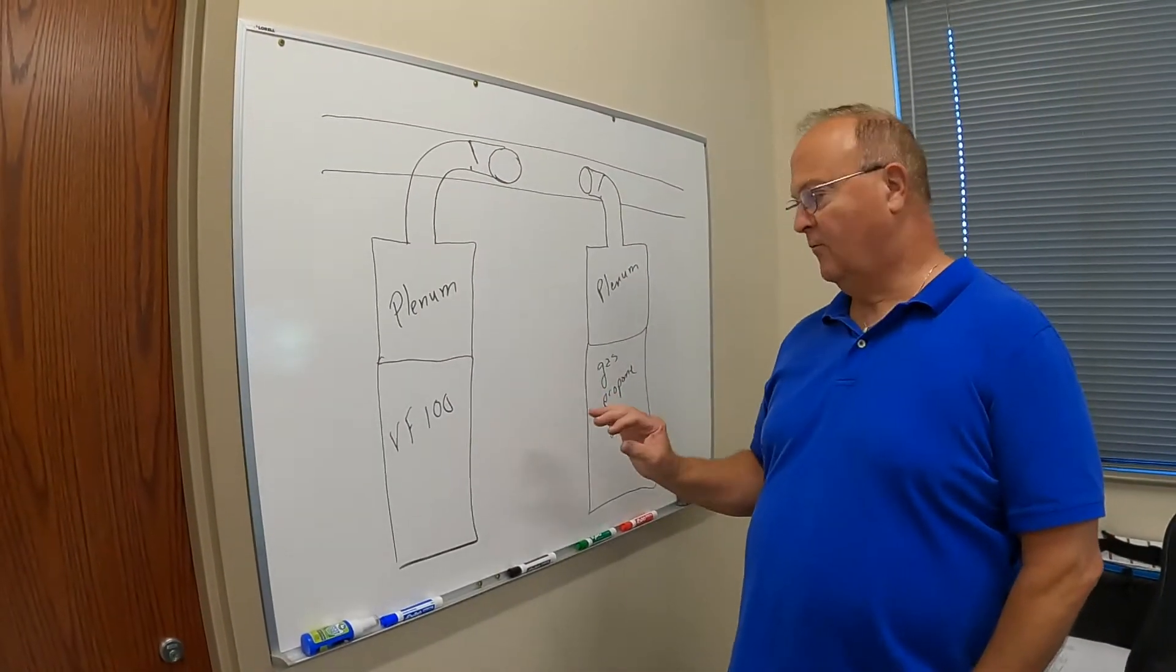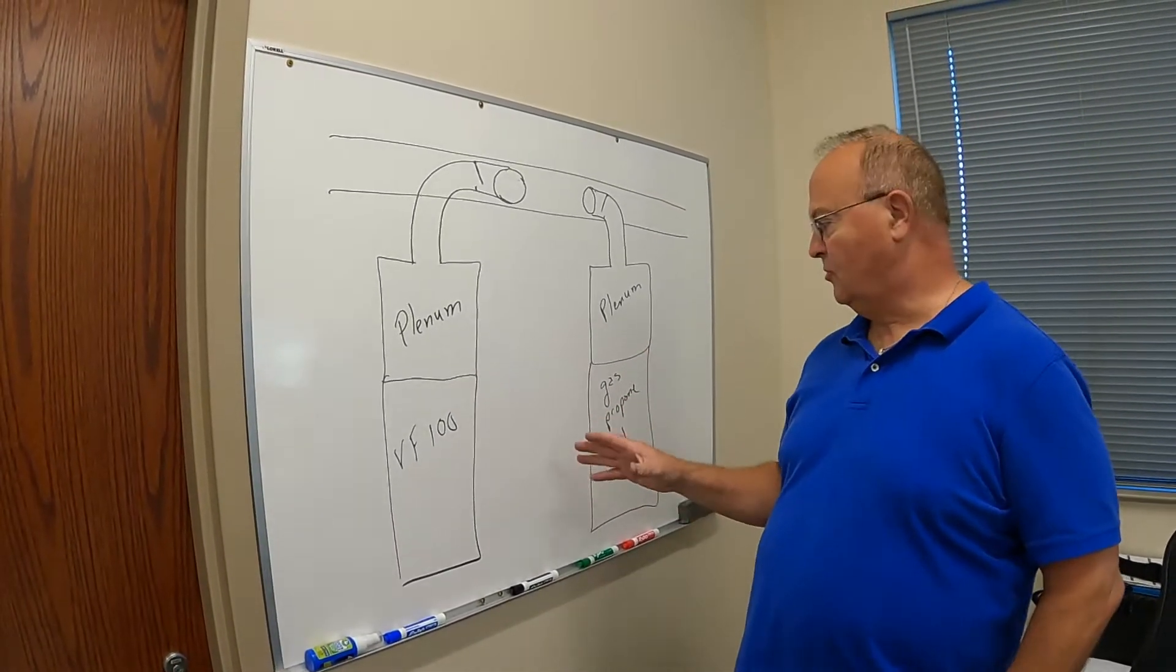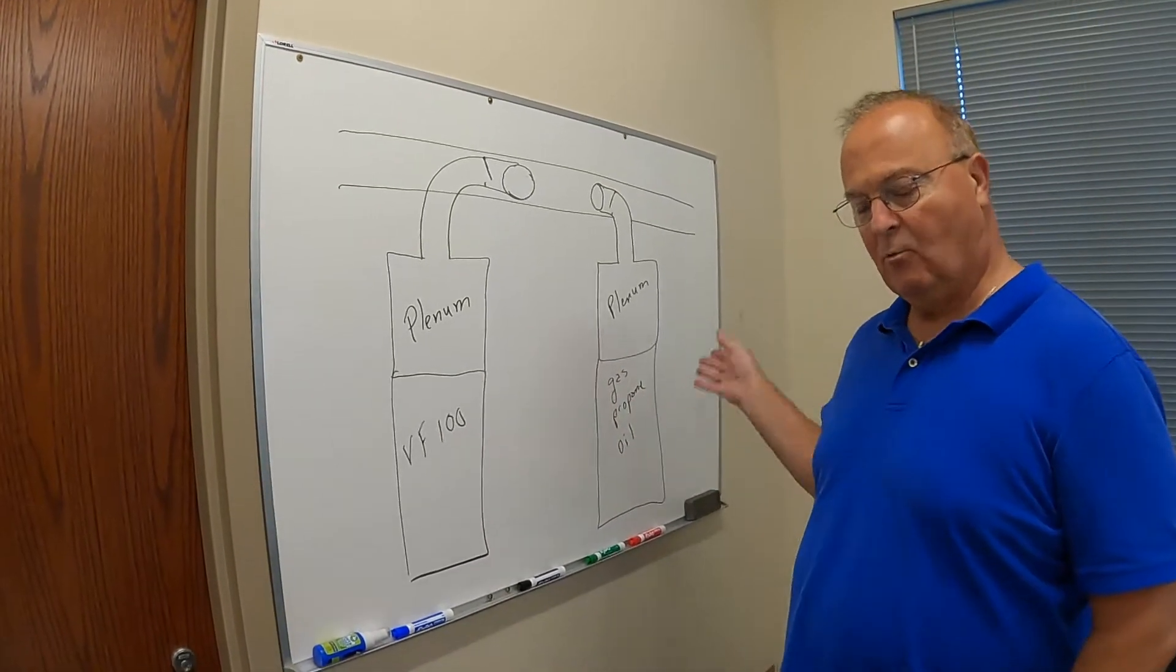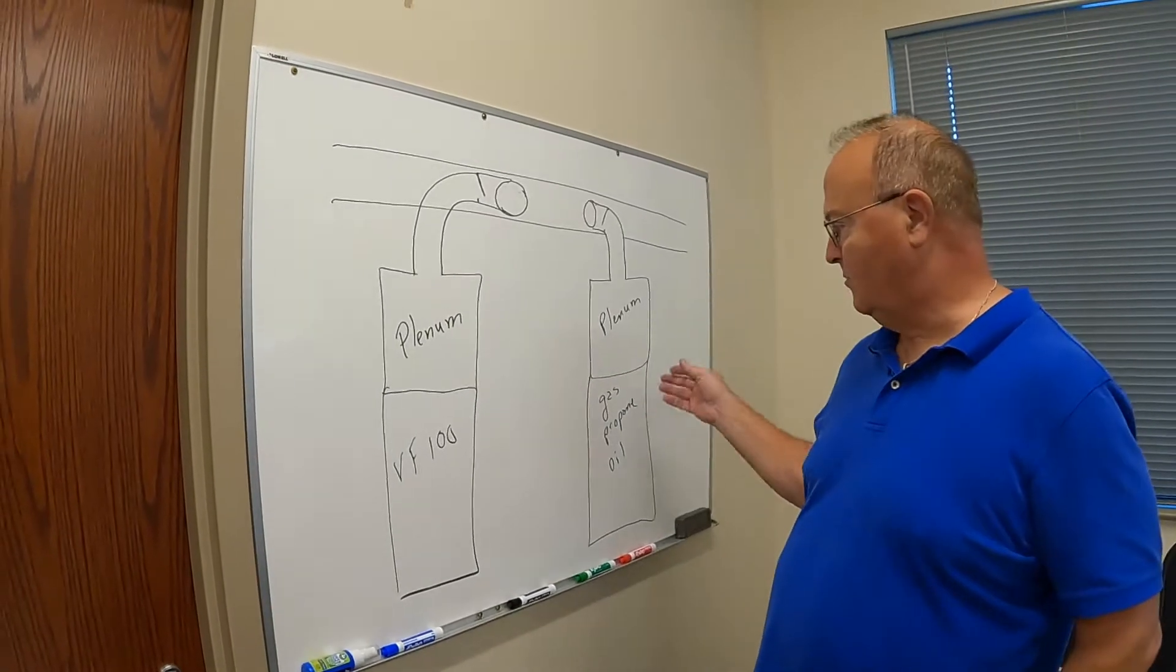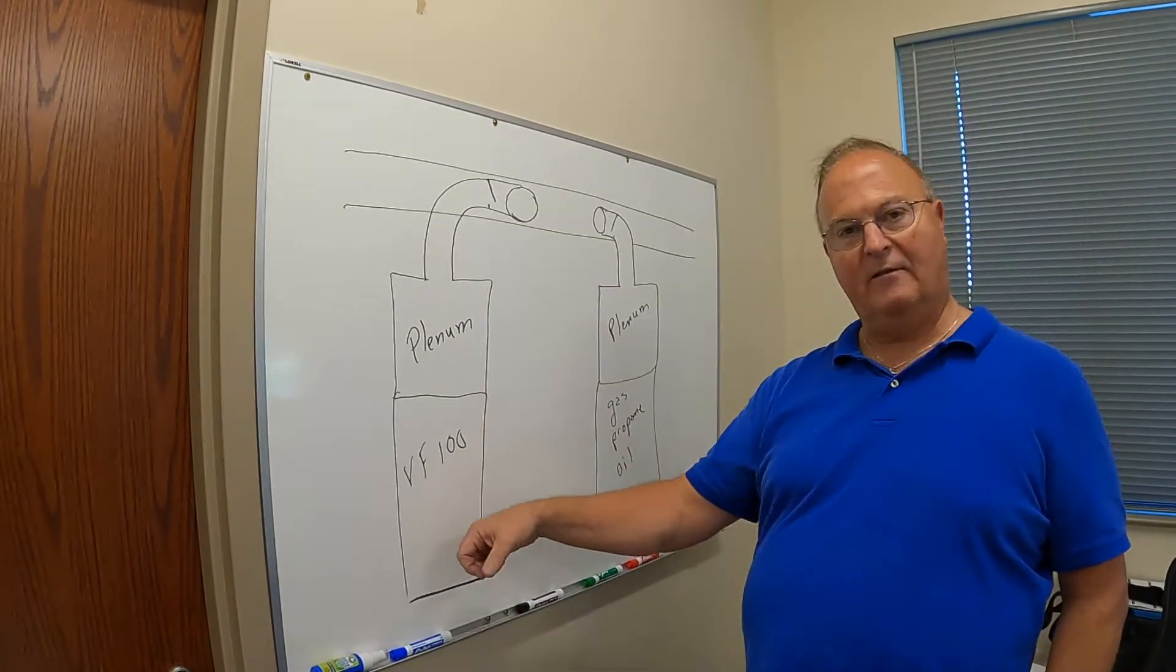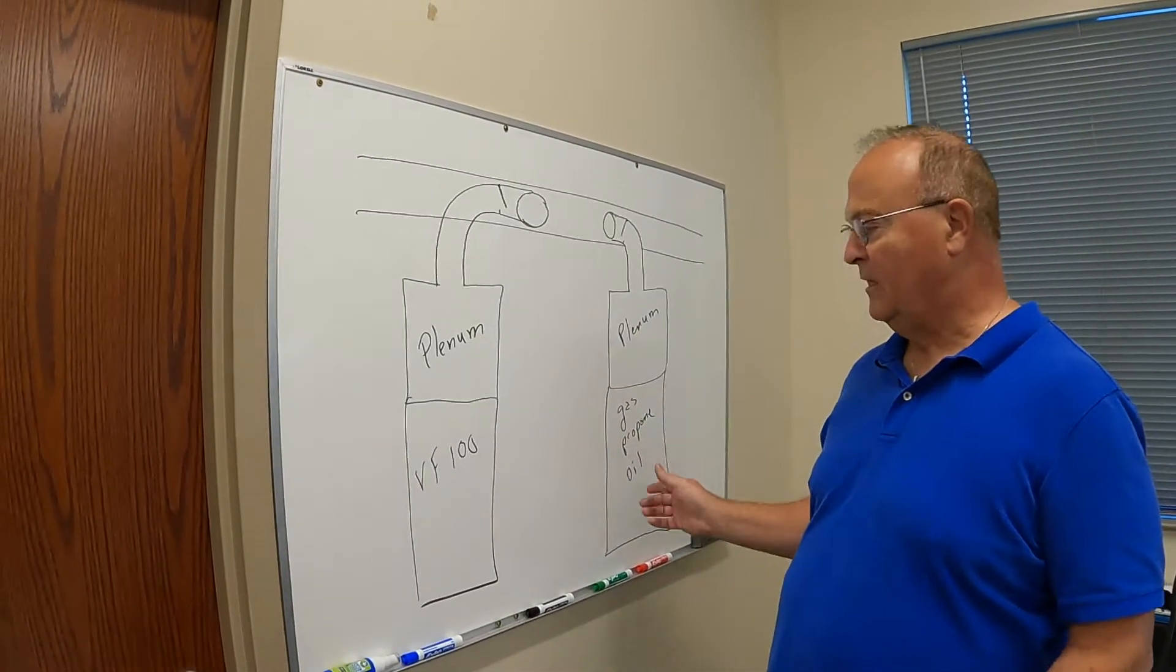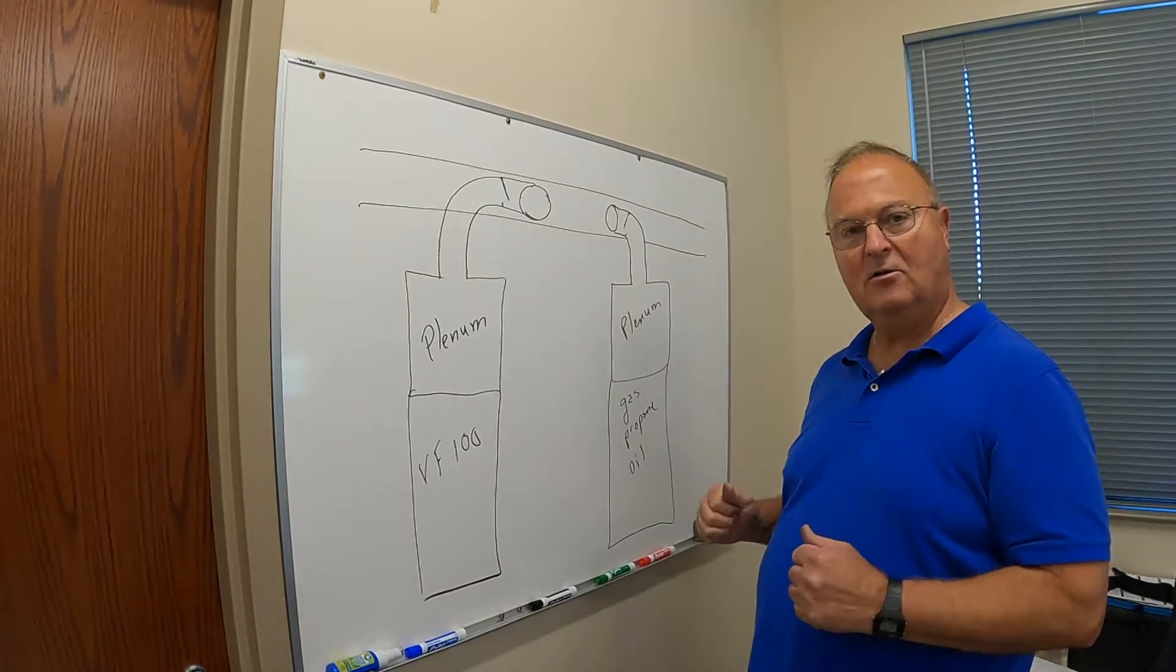So when you're doing the ducting for your furnace, in most applications, you're going to be required to have a backup furnace. Your insurance company is going to want to know if you're in a cold climate like Minnesota or the northern part of the country, that if you're not home and the fire goes out, that you still have backup heat so your water pipes don't freeze. So putting two furnaces in together is called commoning your furnaces.